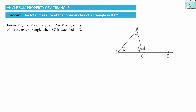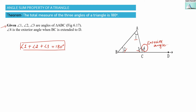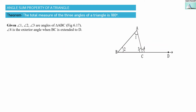What has been given to us is that angle 1, angle 2, and angle 3 are angles of triangle ABC, as we can see in this figure. These are the angles of the triangle, and we are going to prove that angle 1 plus angle 2 plus angle 3 equals 180 degrees. Additionally, angle 4 is given as an exterior angle. With all these given details, we are going to prove that the total measure of the three angles of the triangle is 180 degrees.